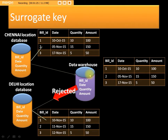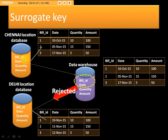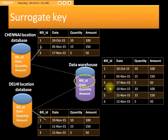But if we want to load data from the daily location database into the data warehouse, we need to make the bill_id a sequence-generated number instead of loading it from the source tables. Since both source tables have the same — meaning duplicate — bill_id values, we use a sequence generator. When loading from the daily location database, the bill_id will be generated starting from four, five, six.